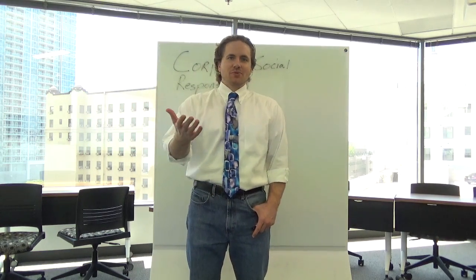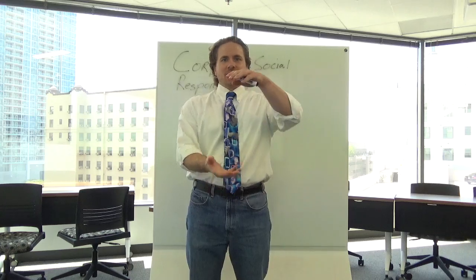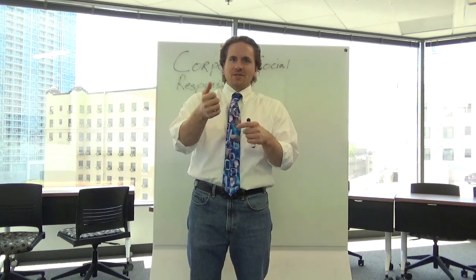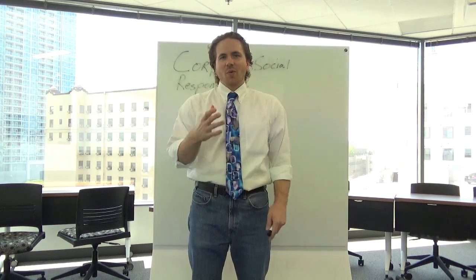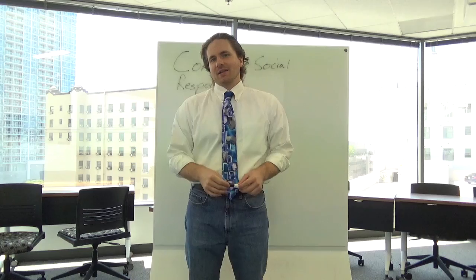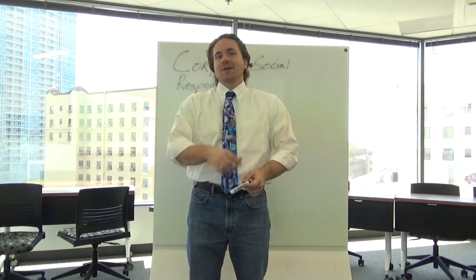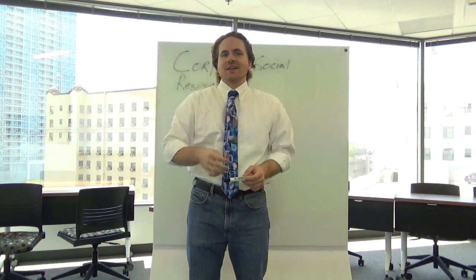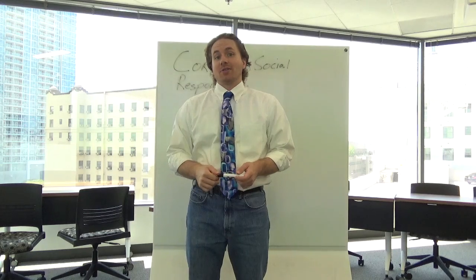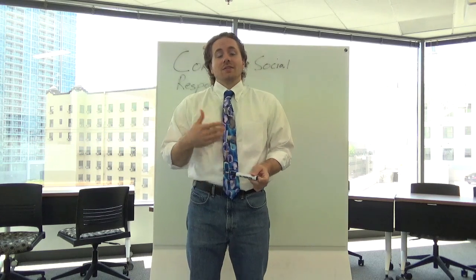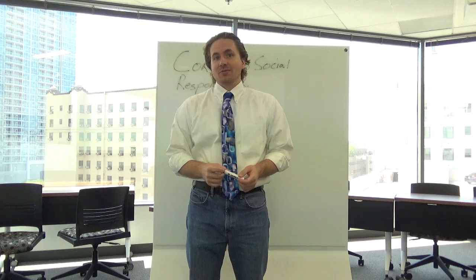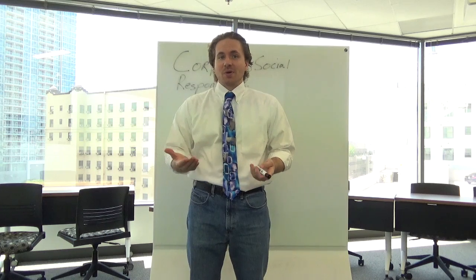Have you ever seen a beer stein before? You know, the big German beer mugs with one of those metal lids on it? Do you ever wonder why there was a metal lid on there? It was because tavern keepers in the Middle Ages thought that putting a lid on there would keep out the plague. This is a great early example of corporate social responsibility.